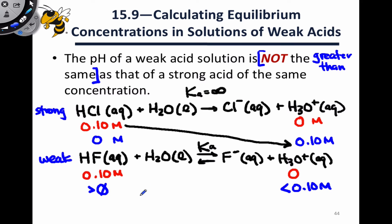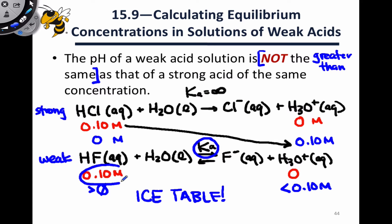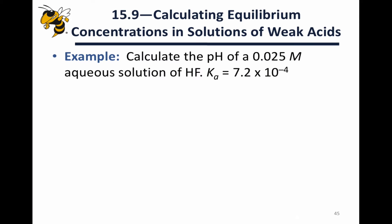The specific tool we're going to make use of is one we've seen before: an ICE table. Using a given Ka value and a given initial concentration of HF, we can figure out the change — whether the reaction is going to go forward or backward and to what extent — the equilibrium concentrations, and from there the equilibrium pH. Let's look at a specific example of this phenomenon in action.